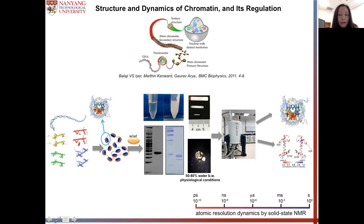We typically use either solution-state NMR or solid-state NMR to look at the nucleosome systems. Normally in our sample, we have one of the histones which is isotope-labeled, and we use the isotope-labeled histone and unlabeled histone or DNA to reconstitute nucleosome arrays in vitro or nucleosome core particles. With or without the presence of binding factors, we can look at the structure, dynamics, and interactions between different components using solid-state or solution-state NMR.